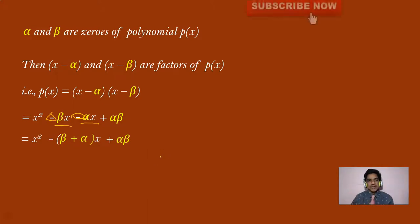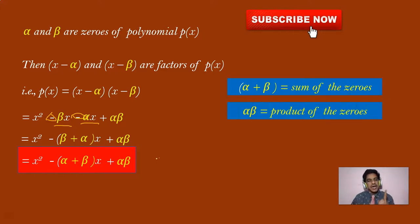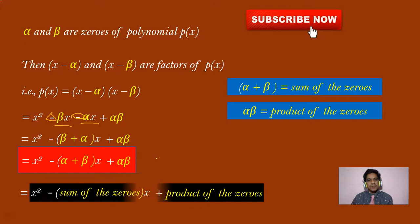So the formula is: the quadratic polynomial with zeros alpha and beta is x squared minus (alpha plus beta)x plus alpha beta. Here, alpha plus beta is the sum of the zeros and alpha beta is the product of the zeros. So the formula becomes: x squared minus (sum of the zeros) times x plus (product of the zeros). This is the generalized formula for finding a quadratic polynomial given its zeros.